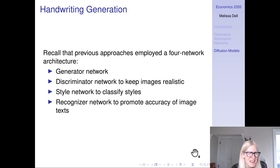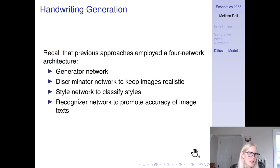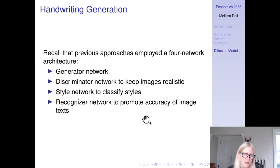Recall that the handwriting transformer paper from the GAN video employed a four-network architecture: the generator network (an encoder-decoder transformer), a discriminator network (a ConvNet to keep images realistic), a style network to classify styles, and a recognizer network to promote accuracy of image text. This felt very convoluted, and if we wanted to extend this to Chinese handwriting, it would be very complicated to train and work with — but it's kind of the best that exists.